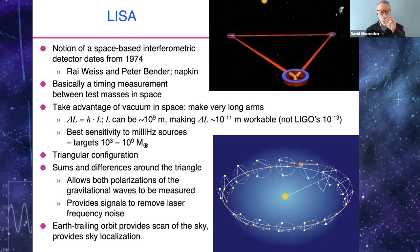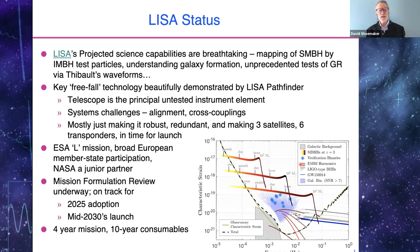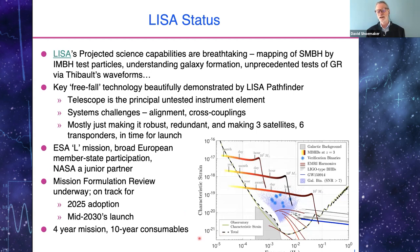The projected science capabilities are truly breathtaking: mapping supermassive black holes by intermediate-mass test particles, understanding galaxy formation, unprecedented tests of general relativity where post-Newtonian waveforms must be pushed to ever higher precision. This is a snapshot from the proposal to ESA for the LISA mission, showing the range of sources — arcs of supermassive black hole paths at various scales, sources seen both from space and on the ground, and a huge number of white dwarfs forming a static background that can be regressed out. The key free-fall technology of LISA was beautifully demonstrated by LISA Pathfinder.